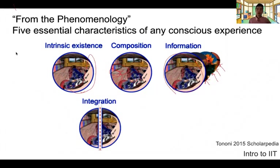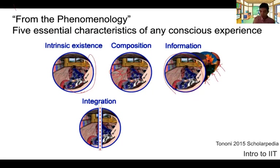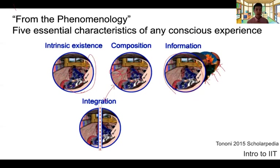Then there is integration. The integration axiom of IIT means that any moment of experience is always integrated and experienced as a whole. For example, the figure shows that experience is never experienced independently in the left half and the right half of the visual field — it is always experienced as one thing at a time. The parts cannot be accessed or experienced separately. This seems contradictory to composition, but experience is always integrated and composed, giving it uniqueness at any one time.